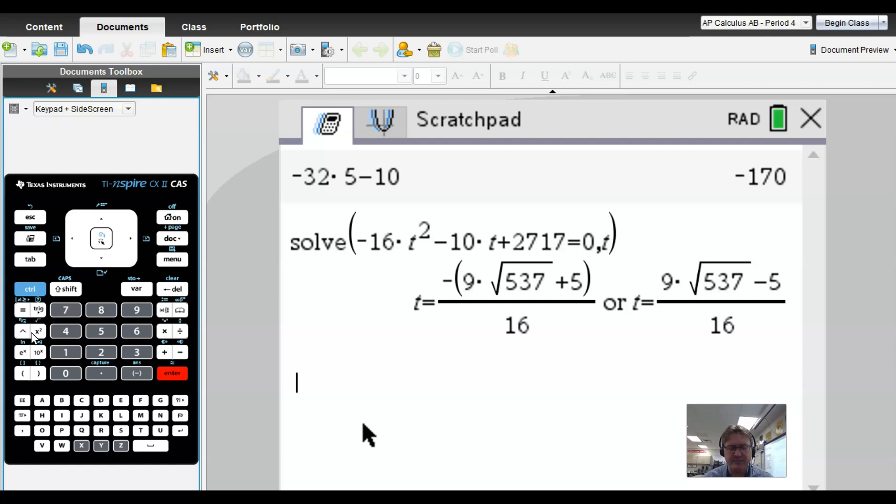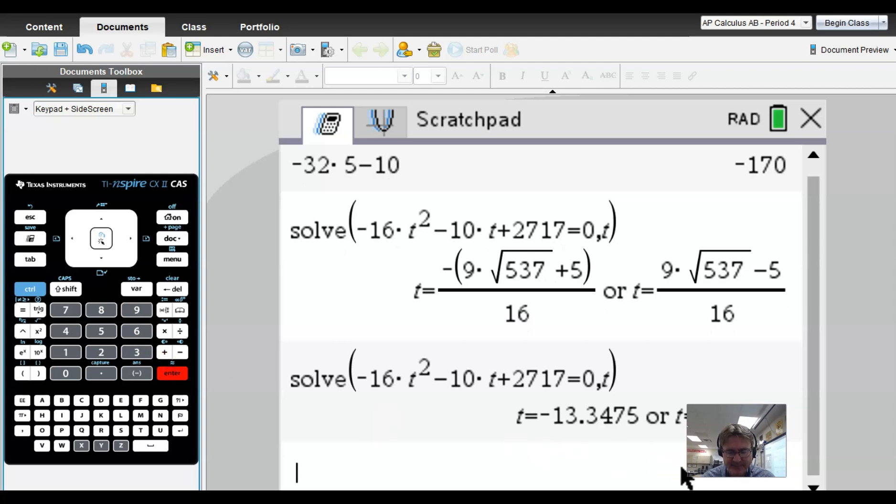Once we set that up, we get a couple of answers. What a smart aleck calculator—it gives us these answers in exact square root form, which we really don't want. I respect that these are accurate answers, but I'd rather get the approximation. Control-Enter will make that happen. There are two different times for which this equation equals zero. One makes no sense at all. We're going to toss away the negative time because it's illogical. But the positive 12.723 is what we'll use.